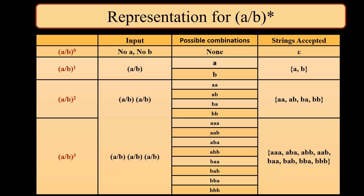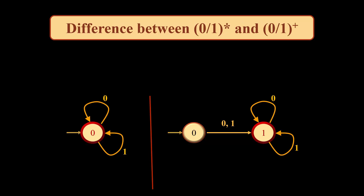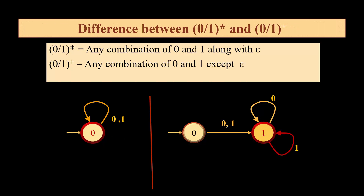For (a or b)^3, that means (a or b) into (a or b) into (a or b), so we can have 2^3 = 8 combinations in all: aaa, aab, and so on up to bbb. All the strings which will be accepted have been put on the right side of the column. Now, what is the difference between (0 or 1)* and (0 or 1)+? For (0 or 1)* we will have strings ranging from length 0 up to infinity — any combination of 0 and 1 along with epsilon. On the other hand, (0 or 1)+ will have any combination of 0 and 1 except epsilon.